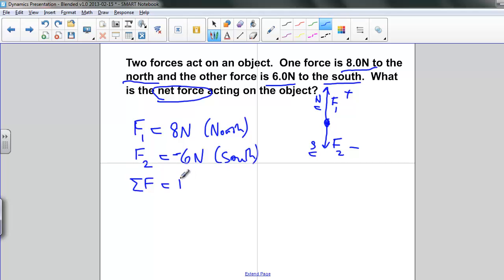So when we add our forces to get the net force, we're going to get positive 8 newtons to the north, and 6 newtons to the south. Our answer, 2 newtons. And it's positive, so it's to the north. The net force is 2 newtons to the north.